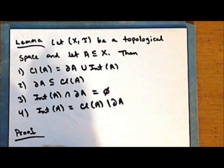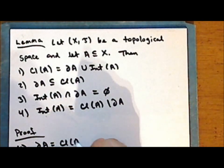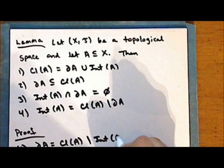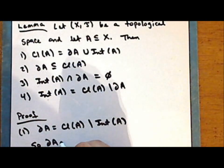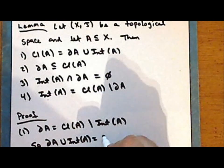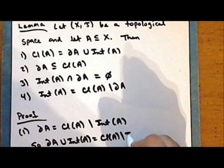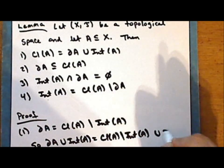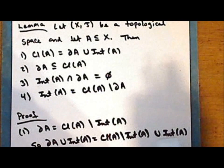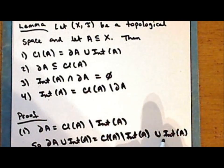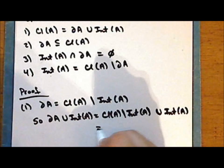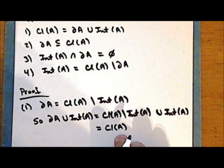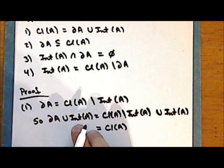Proof. First statement: the boundary of A is the closure of A set minus the interior of A. And so the union of the boundary of A with the interior of A is the union of the complement of the interior of A in the closure of A, with the interior of A. Notice that we are adding back those elements which were removed from the closure, and so this union is the closure of A. Therefore the closure of A is the union of the boundary of A with the interior of A.